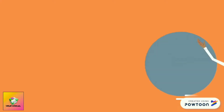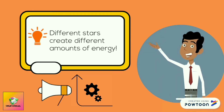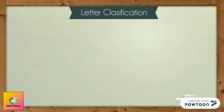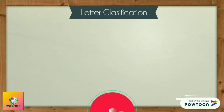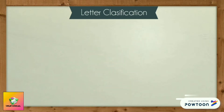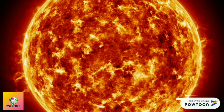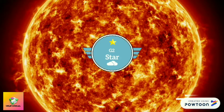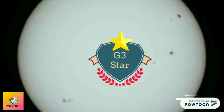Different stars create different amounts of energy. We can classify them by using a special letter system: O, B, A, F, G, K, and M. For example, the sun has a surface temperature of about 5,500 degrees Celsius and is a G2 star. A slightly hotter star would be a G1, and a slightly cooler star would be a G3.